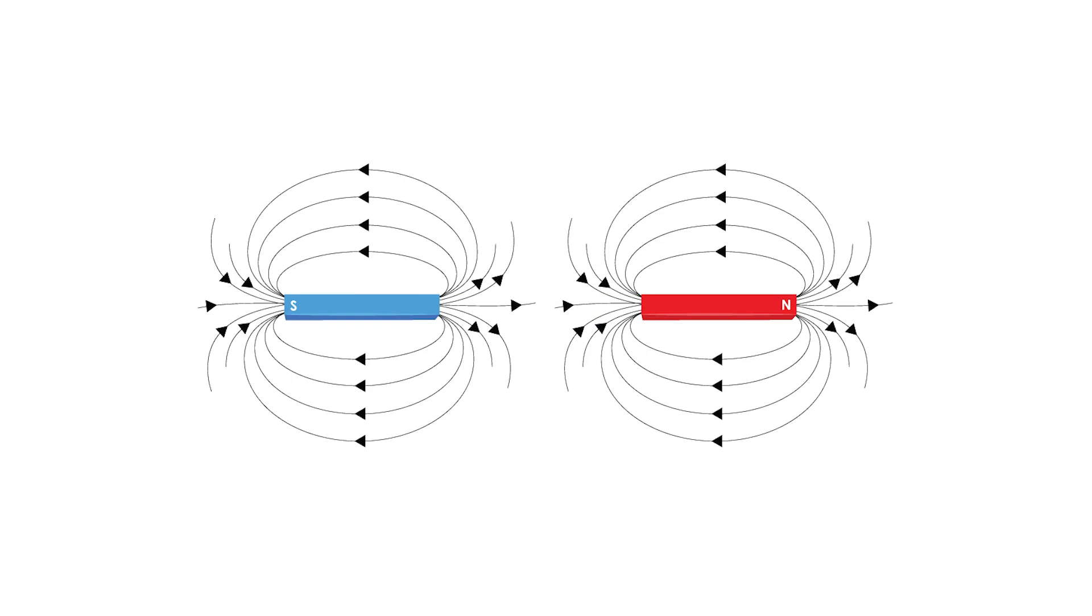By definition, we have to call the end that the magnetic field lines originate from the north pole and the end they enter the south pole. So cutting the magnet in half simply results in two smaller, identical copies of the first magnet.